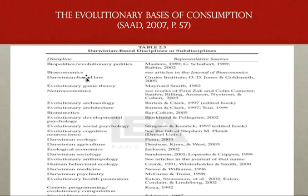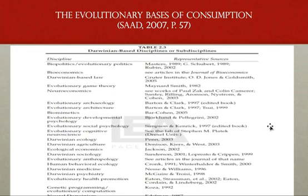There's the field of bioeconomics, and there's actually a journal titled Journal of Bioeconomics — I've published a paper in that journal. There's Darwinian-based law, which I discuss in chapter one of the 2007 book, where I look at Hammurabi's code — specific codes within Hammurabi's code that are very much informed by evolutionary theory. In Hammurabi's time, they didn't use the term evolutionary theory, but they were certainly well aware of our evolved human nature.